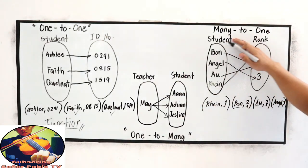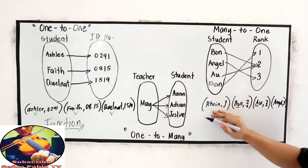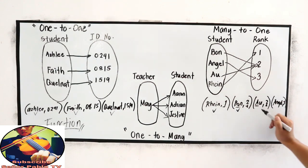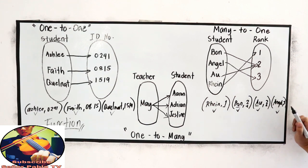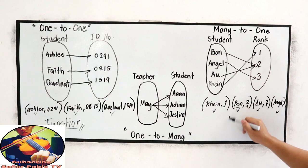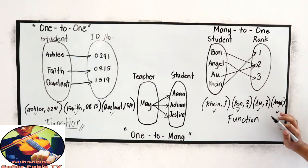How about many-to-one correspondence? Let's check the domain, or the abscissa, Rain, Bon, Au, and Angel. Function or not? It is a function. Why? Because no x-coordinate is repeated.